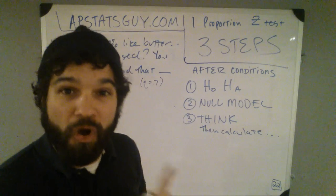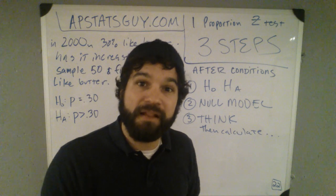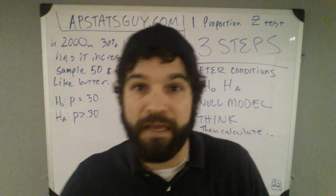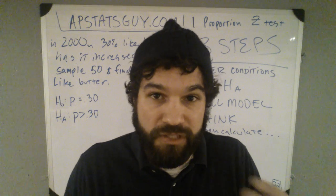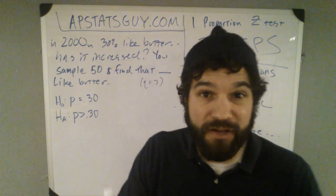So what do I do now? Step two, draw the null model. What's the null model? It's a normal model. It's a normal distribution, or a t-model, or a chi-squared model. This one happens to be z's, a normal model, centered at the null.